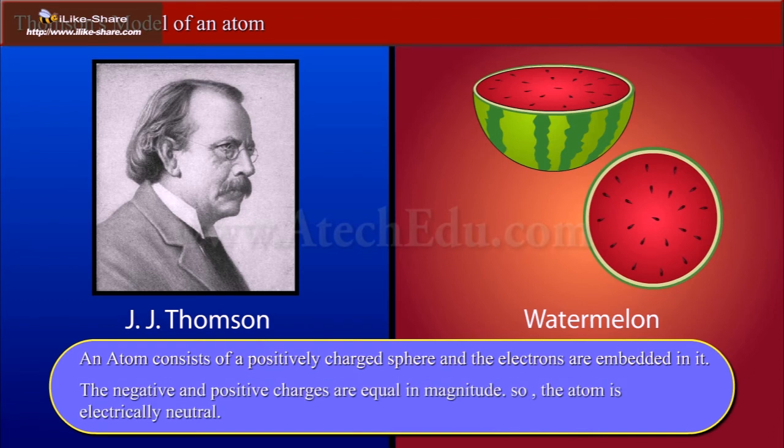Thomson proposed that an atom consists of a positively charged sphere and the electrons are embedded in it. The negative and positive charges are equal in magnitude, so the atom is electrically neutral.